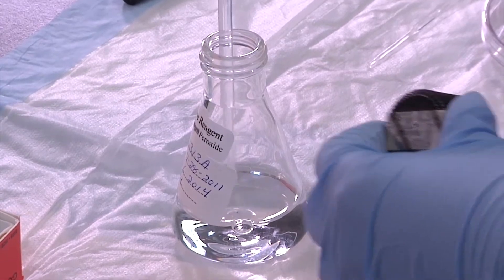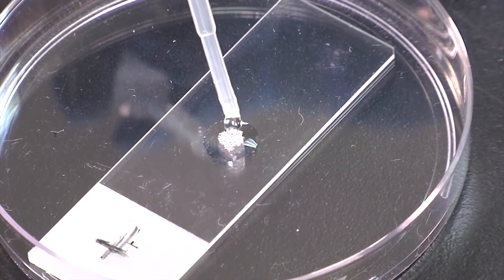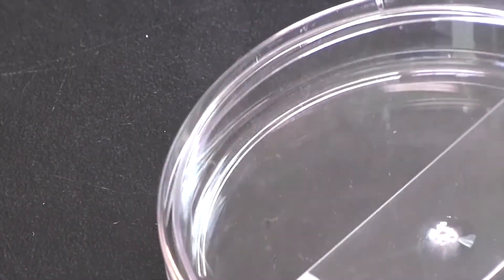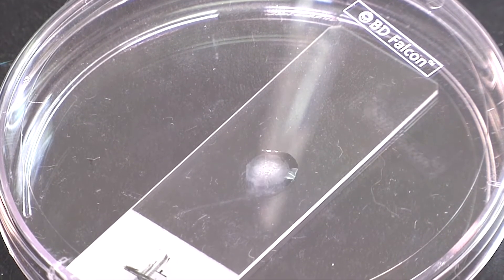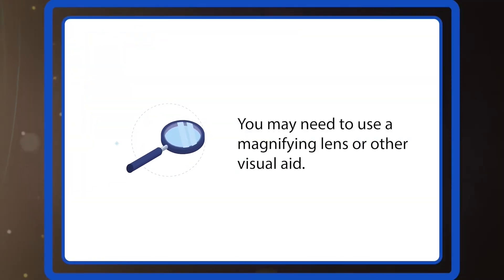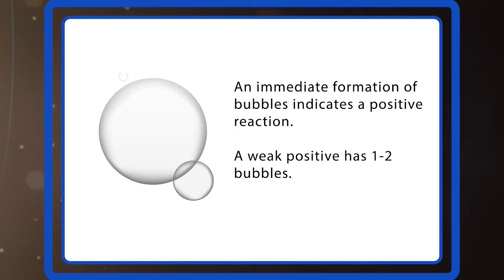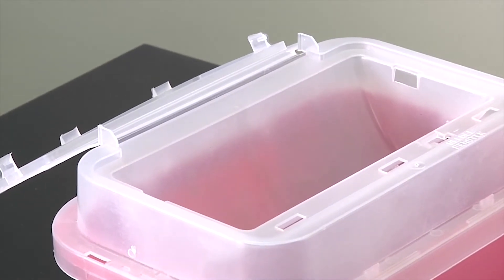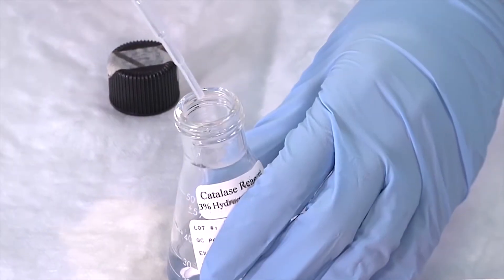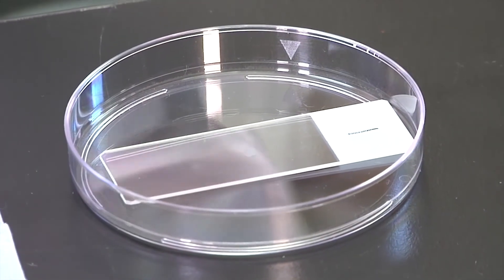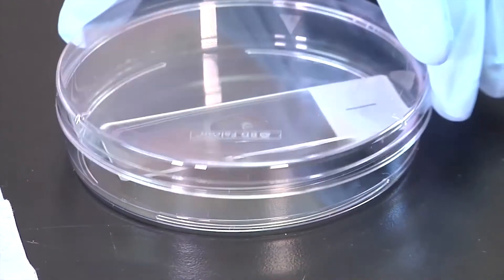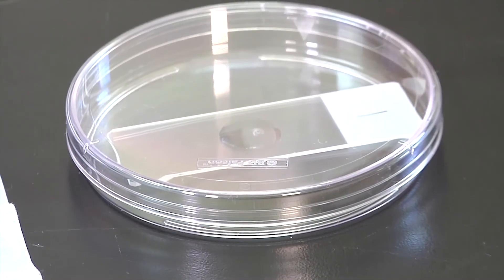Next, using a dropper, add one or two drops of H2O2 solution to the smeared colony on the positive control slide and immediately place the cover onto the petri dish. Against your bench top or a dark background, look for the formation of bubbles immediately upon the addition of the H2O2. You may need to use a magnifying lens or other visual aid. An immediate formation of bubbles indicates a positive reaction; a weak positive has one to two bubbles. Discard your pipette into a biohazardous waste container. Then test the negative control slide: add one drop of H2O2 solution to the smeared colony on the negative control slide and close the petri dish. No formation of bubbles within 20 seconds indicates a negative reaction.